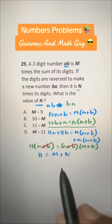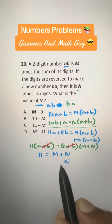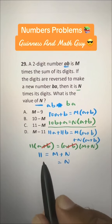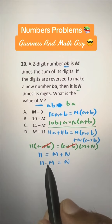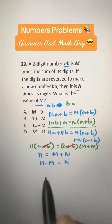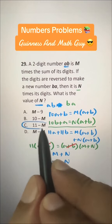Now, they want the value of N. So, we'll keep N on one side and bring this M here to make it minus M. When it changes the side, it changes the sign also. So, N is equal to 11 minus M. That is our answer, choice C.